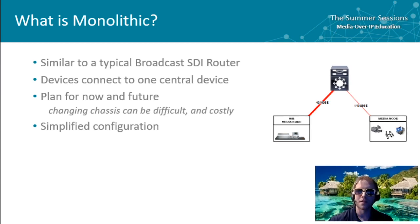Monolithic systems are similar to your broadcast SDI router. With this type of system, devices connect directly to one central network switch or device. This system is good because it helps you plan for now and the future, but it's limited — your chassis can only be swapped out for certain sizes, which can be difficult and costly. The configurations of these systems are also very simplified compared to their alternative.